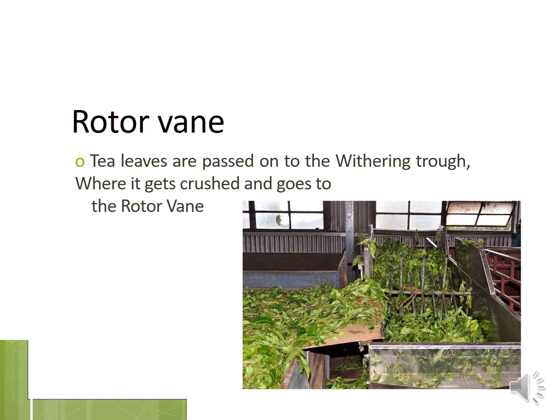Rotor vane: tea leaves are passed into the withering trough where they get crushed and then go to the rotor vane. As you can see, tea leaves are passed from the withering trough and then move to the rotor vane.